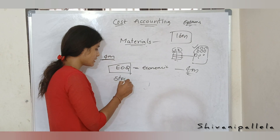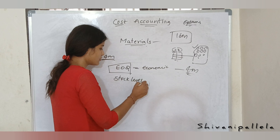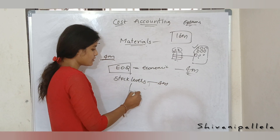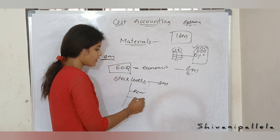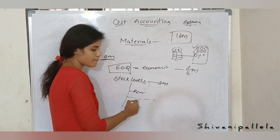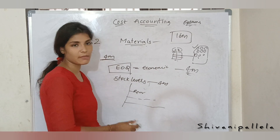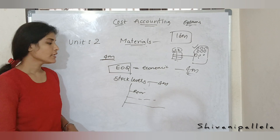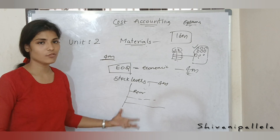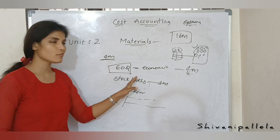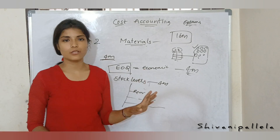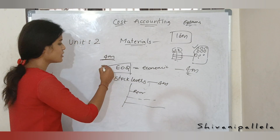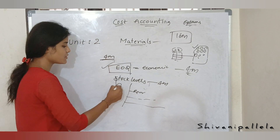Next you will have stock levels for 4 marks, which include reorder quantity, reorder level, maximum reorder level, and minimum reorder level. These are not much important. If you remember the formulas you can score, but if you don't want to concentrate on stock levels for 4 marks, just learn EOQ and skip stock levels.